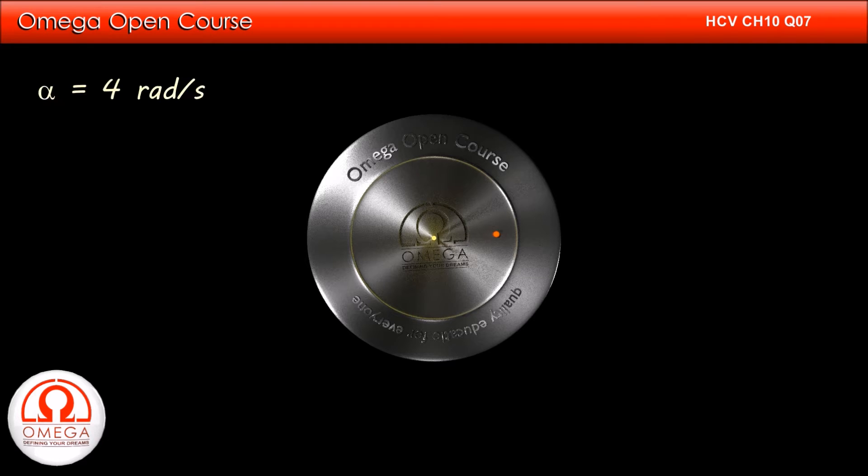The angular acceleration of the disk is 4 radians per second square and time taken is 1 second. So the angular speed of the disk at that instant is α × t, i.e., 4 radians per second.